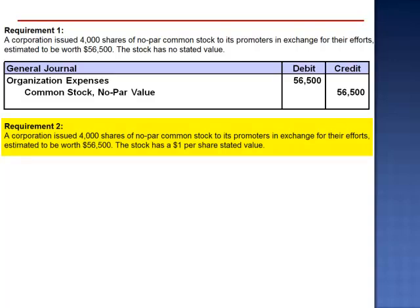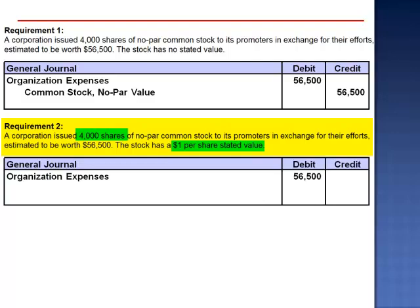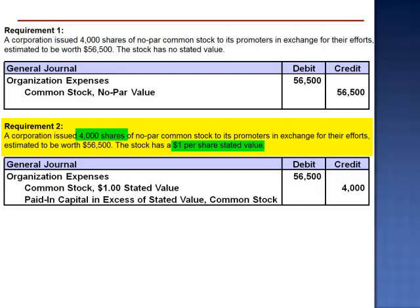Requirement 2 looks at the exact same transaction — $56,500 of organization expense — but now they issue 4,000 shares of no-par common stock that has a $1 per share stated value. We debit organization expense for $56,500 and credit the common stock $1 stated value for the stated value of 4,000 shares, $4,000, and the balance is credited to paid-in capital in excess of stated value on common stock.